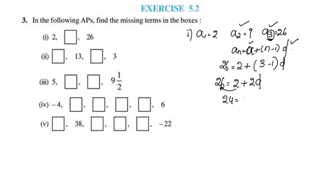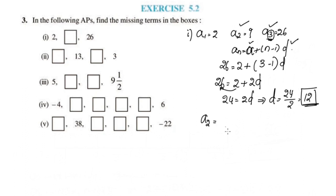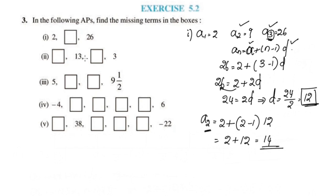D is 12. So A2 = a + (n - 1) × d = 2 + (2 - 1) × 12 = 2 + 1 × 12 = 14. A2 is 14.